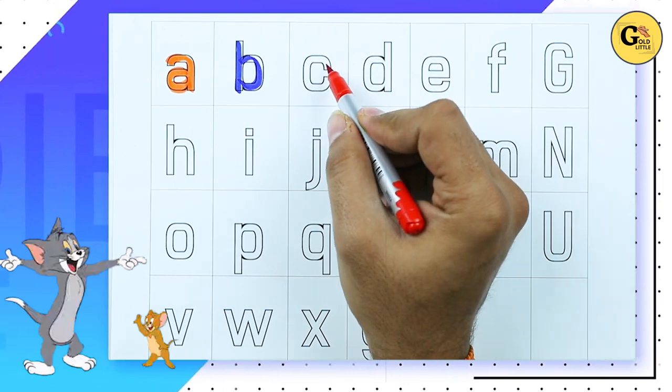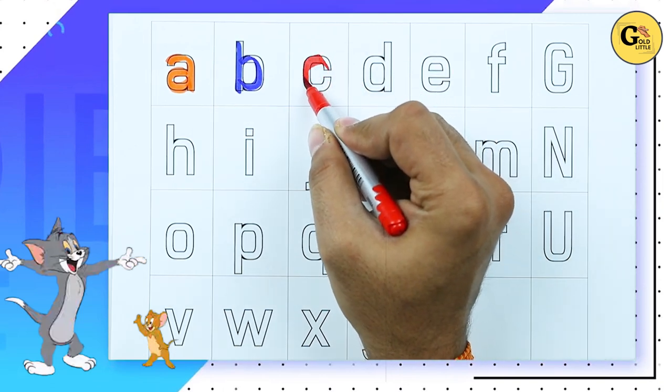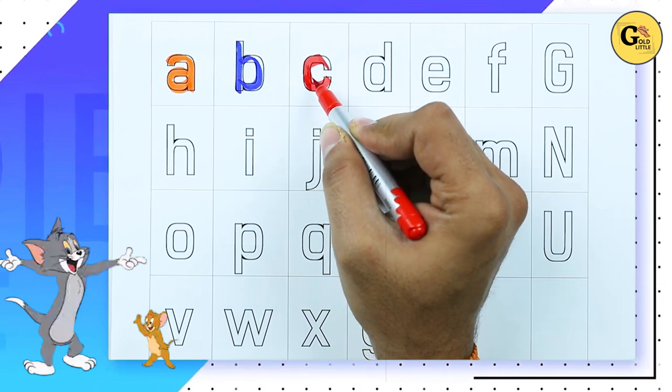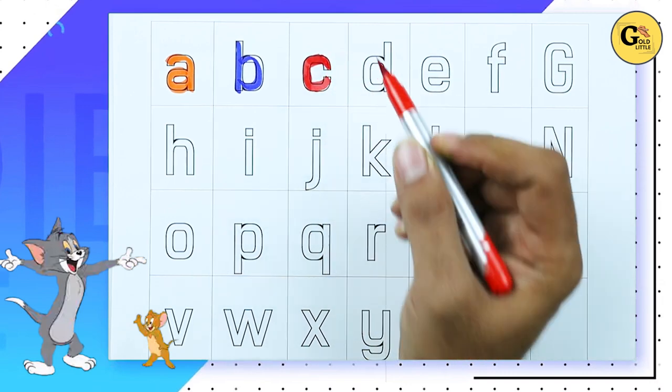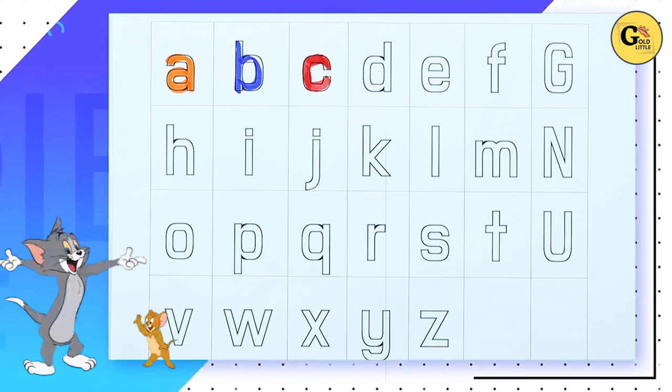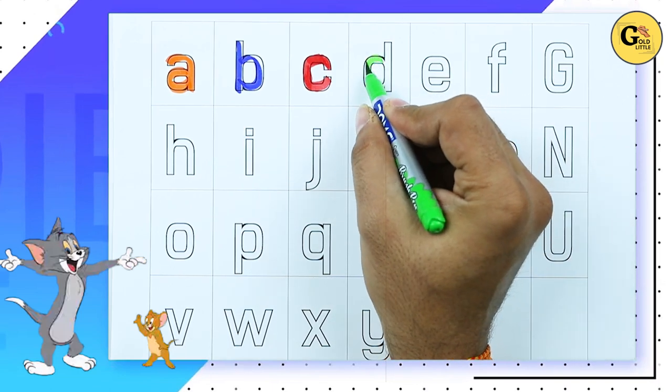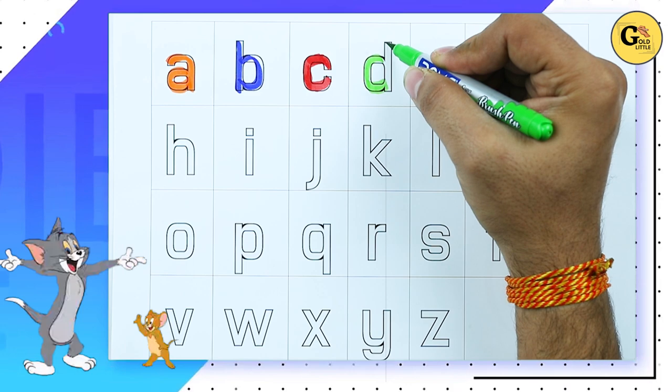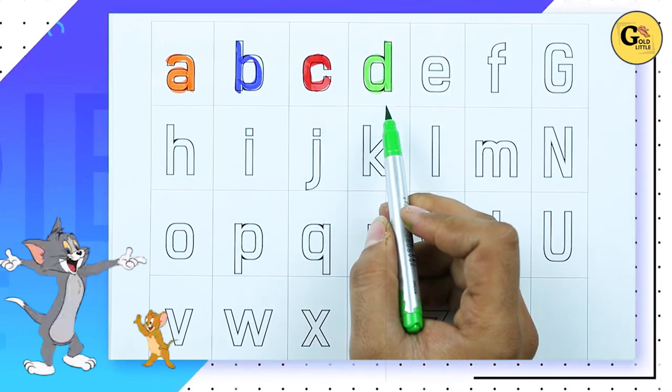C for Cat. It's small C. C for Cat. D. D for Dog. Like it's D. D for Dog.